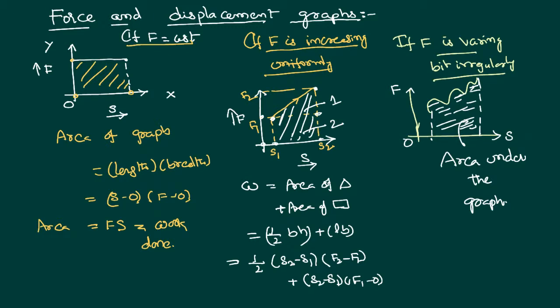If the force is constant, what happens? If the force is increasing uniformly, what happens? And if the force is varying in an irregular way, what happens? What are going to be the different shapes of the graphs?